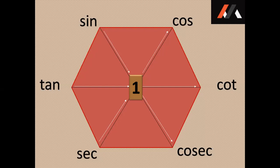Now let's proceed to trigonometric ratios of complementary angles. I would like to draw a double-headed arrow from sine to cos. This means that both sine and cos are complementary to each other. The word complement means the sum of both will add up to 90 degrees. So we can conclude that sin theta is equal to cos of 90 minus theta. Also, cos theta is equal to sin of 90 minus theta.